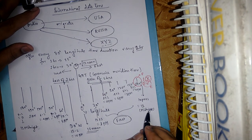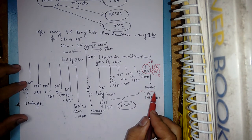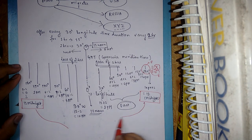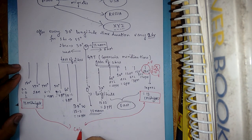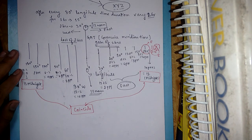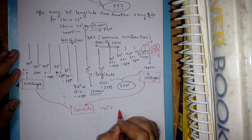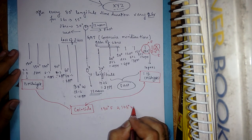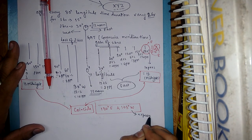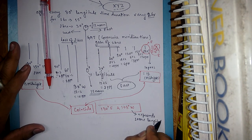So here on both sides we get 12 midnight. Both of them coincide. So 180 degrees east and 180 degrees west actually represent the same line — the same longitude.